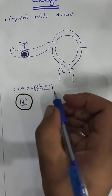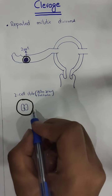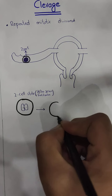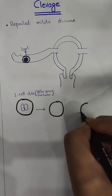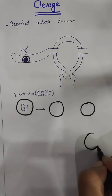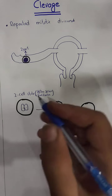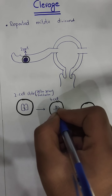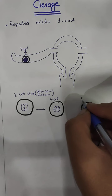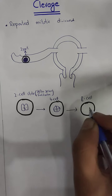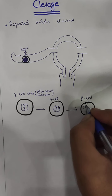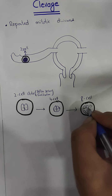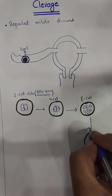Starting from the two-cell stage, it will then change to four cells, and then to the next stage of eight cells. So from two cells we get four cells, then from four cells we get eight cells — this is the eight-cell stage, representing further division.